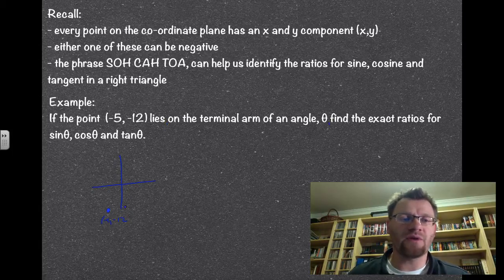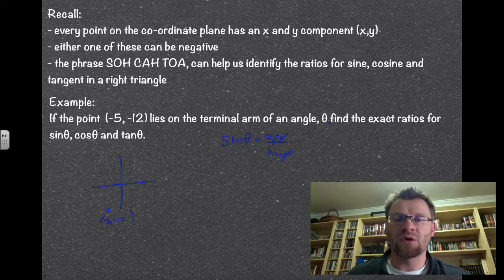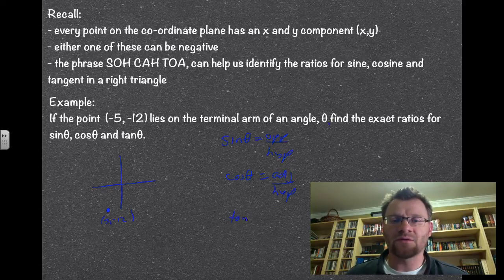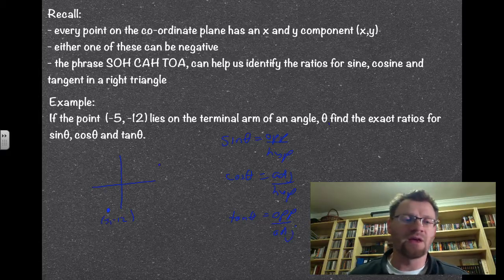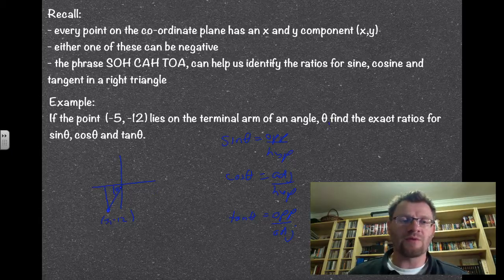We are going to try and find what sine, cos, and tan are. If you remember, using SOHCAHTOA: sine is your opposite over your hypotenuse, cosine is your adjacent over your hypotenuse, and tan is your opposite over adjacent. The problem is we don't have a triangle here yet. So we can draw a triangle and use this concept of reference angles. The reference angle is the angle measured to the nearest x-axis, which would be this angle right here.